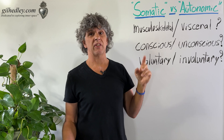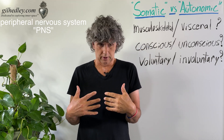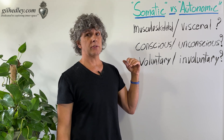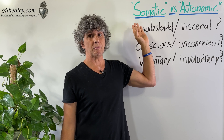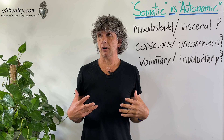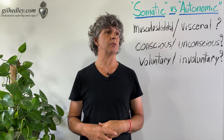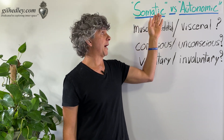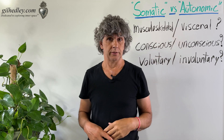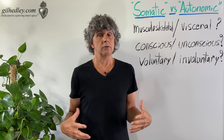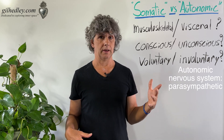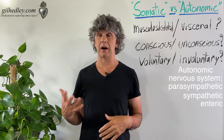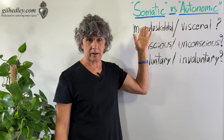A case in point might be the division of the peripheral nervous system — meaning the nerves processing out beyond the central column of the spinal cord and brain — into the categories of somatic and autonomic. The autonomic nervous system would include the parasympathetic and the sympathetic nervous systems, and for some it would also include the enteric nervous system.